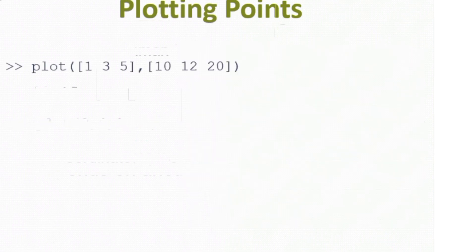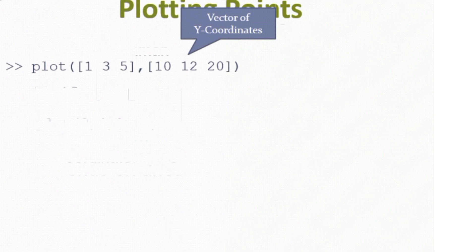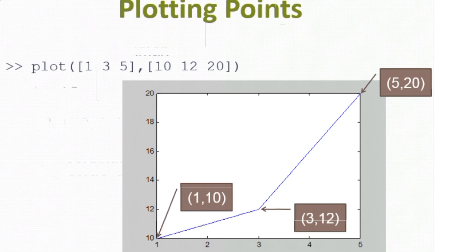Let's look at a slightly more complicated example. Again, I have my plot command. The first argument is the X coordinates of the points I would like to plot — in this case I'm going to plot three points. When I have multiple points, I have to enter them in as a vector or a one-dimensional array, using square brackets with the X coordinates separated by white space. I have a corresponding set of three Y coordinates, also entered as a vector. If I run this command in MATLAB, I get three points. Notice that my points are automatically connected by lines, and those lines are blue — that's the default format.